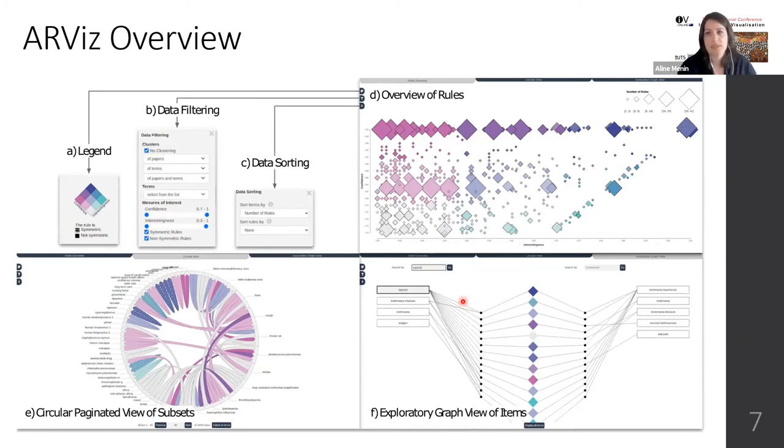For that, we used three synchronized views: a scatter plot, a chord diagram, and an association graph. To maximize the screen space, we used a tab-based layout with a visualization under each tab, and we used three discrete buttons that allow the user to show the legend, the color legend, and the filtering and sorting panels according to their needs.